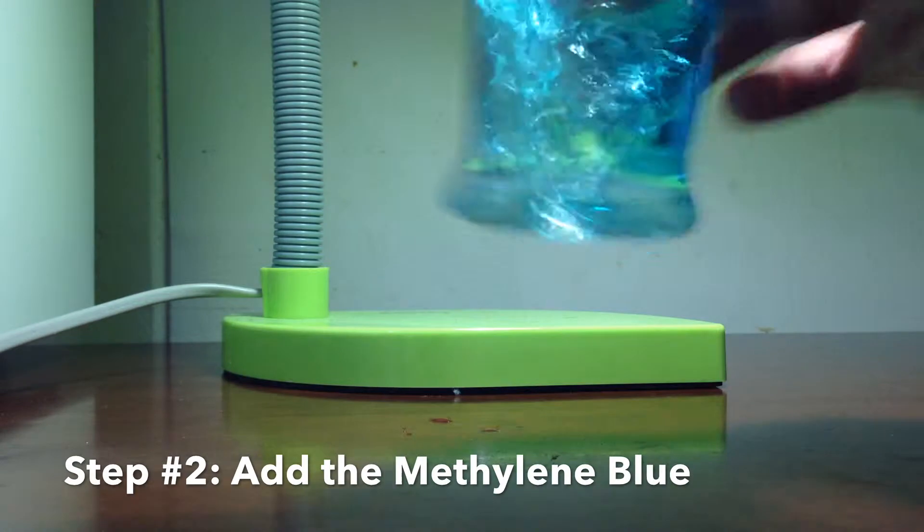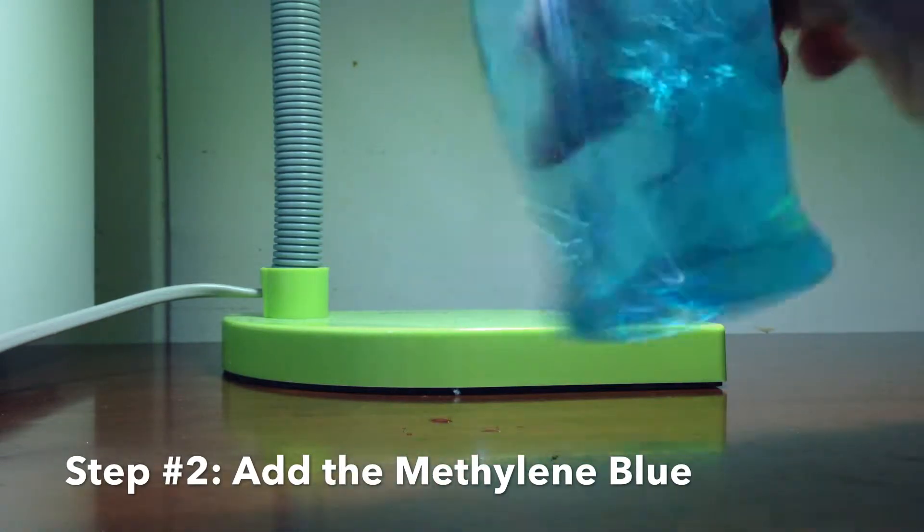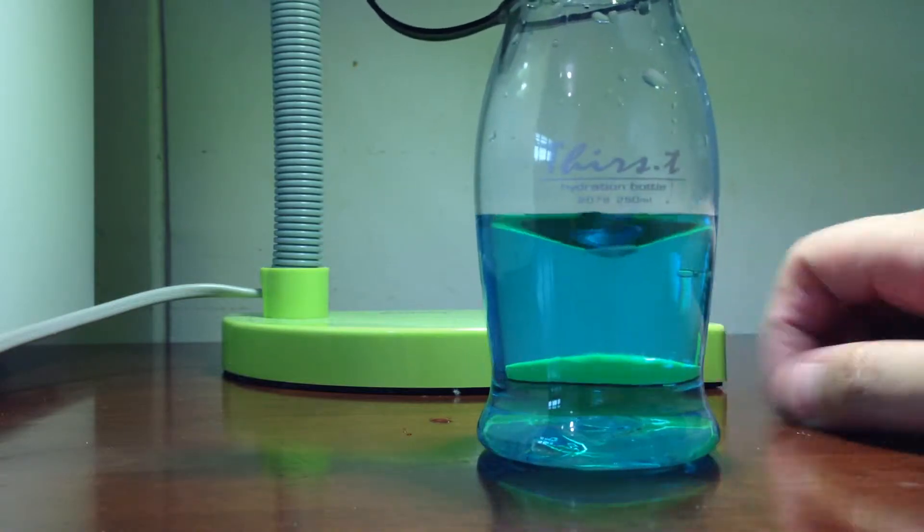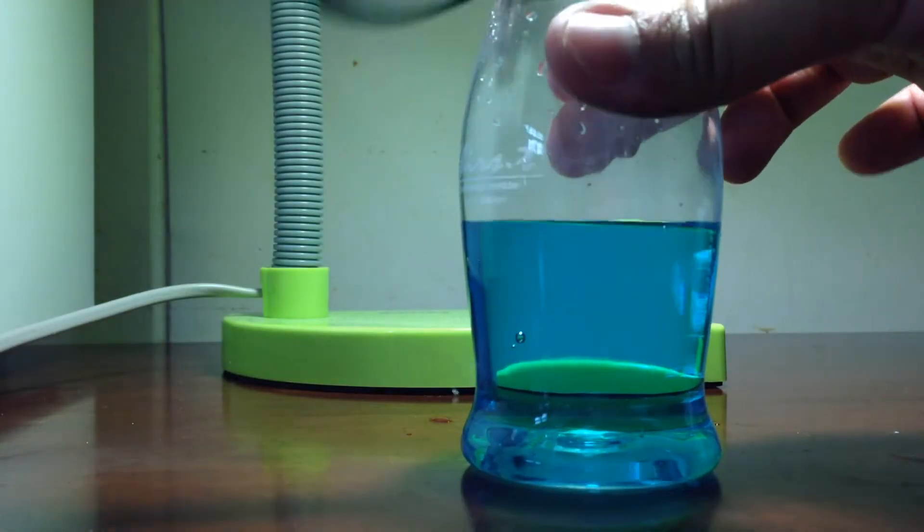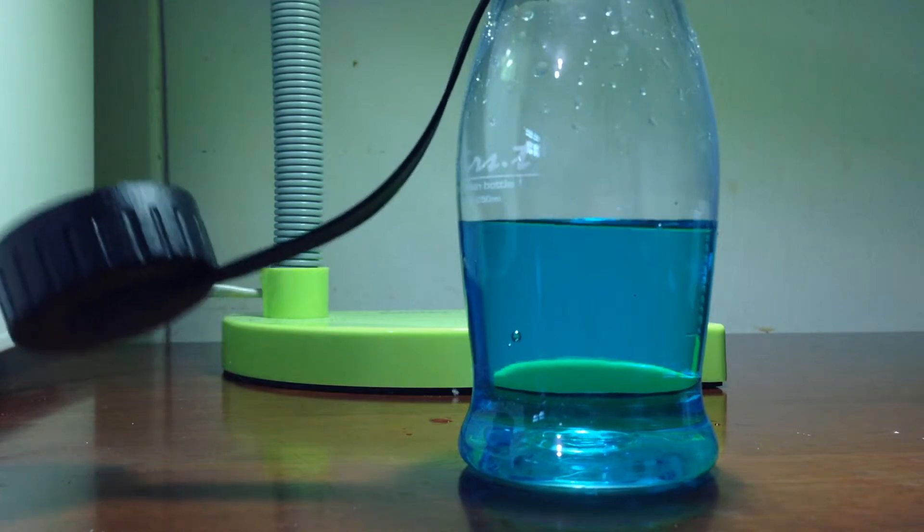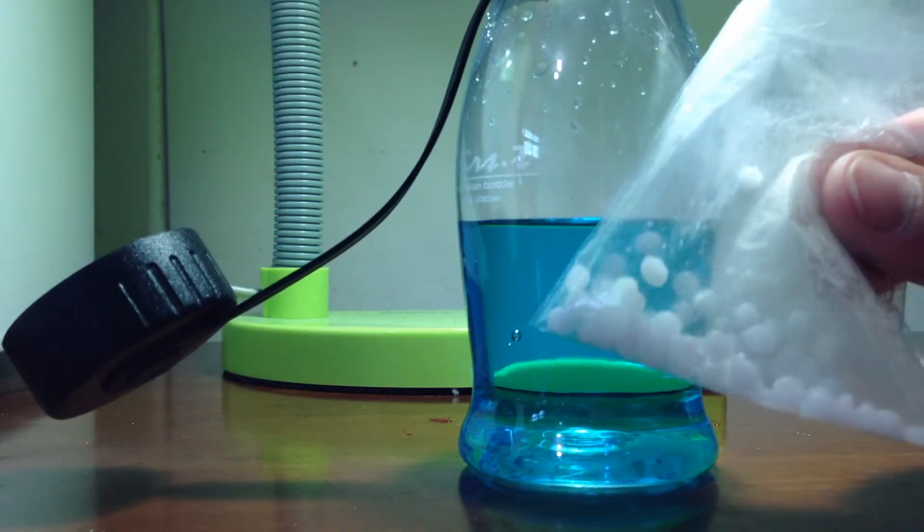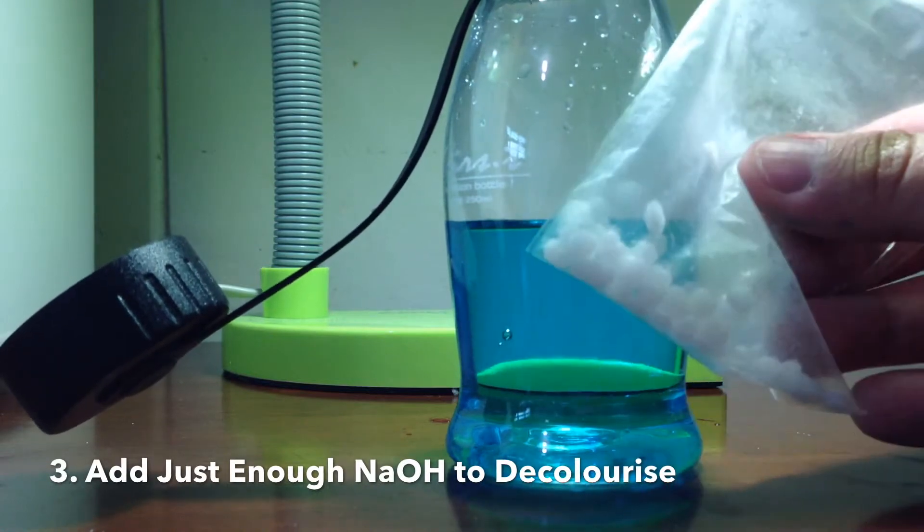Give the bottle a good swirl again. Add sodium hydroxide pellets, pellet by pellet, until the blue color disappears.